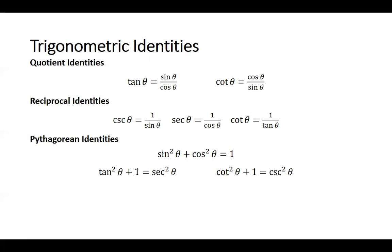If you're dealing with the unit circle, r is equal to 1. And then if we divide through by cosine squared, or if we divide through by sine squared, that's where these other two come from. So we get tangent squared theta plus 1 is equal to secant squared theta, and cotangent squared theta plus 1 is equal to cosecant squared theta.